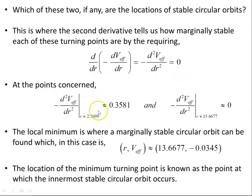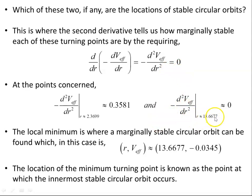At the local maximum, evaluating this second derivative gives a positive quantity. If we didn't have the minus, we'd end up with a negative quantity — it doesn't matter, the same condition is satisfied whether you use the positive second derivative or the negative. Evaluating at the local minimum at R ≈ 13.6677, this is approximately zero, very close to zero but not quite. So it's marginally stable. The local minimum is where a marginally stable circular orbit can be found.